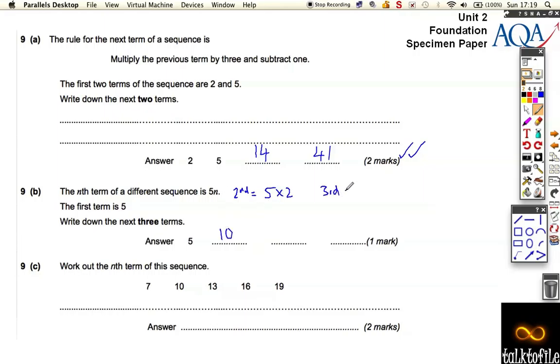To find the third term, you do 5 times 3, which is 15. And to find the fourth term, you do 5 times 4, which is 20. So we're just substituting all the numbers in the sequence we want in for n. And that's why nth term is quite good.